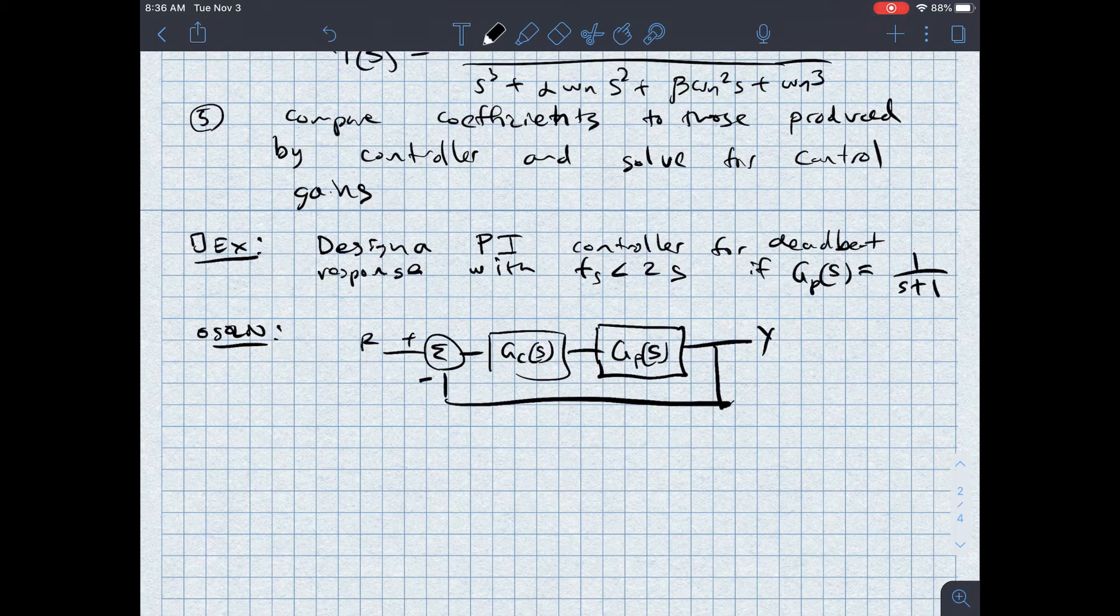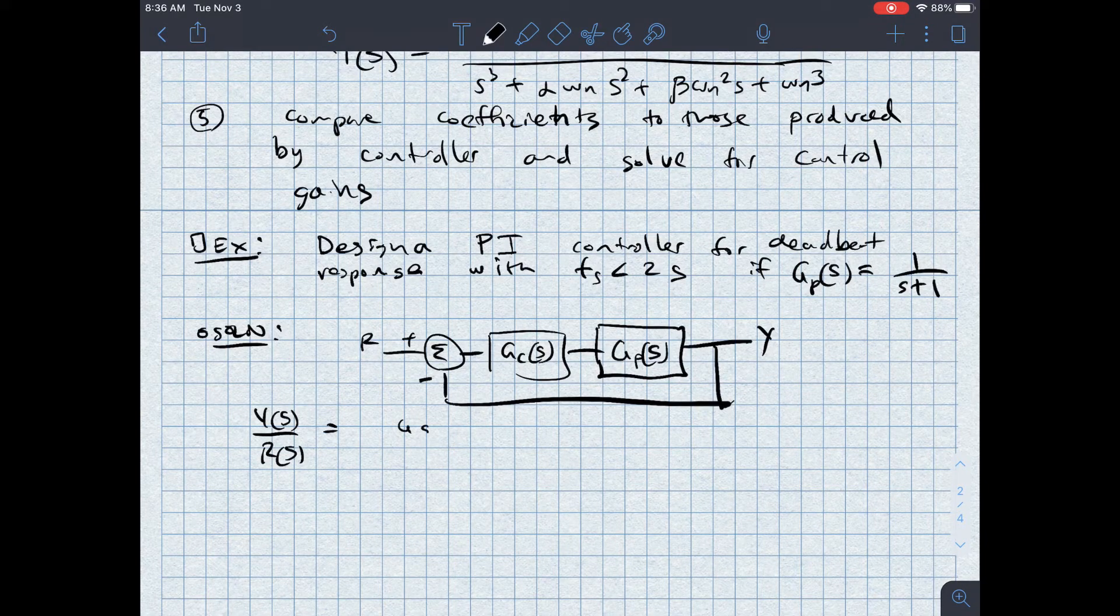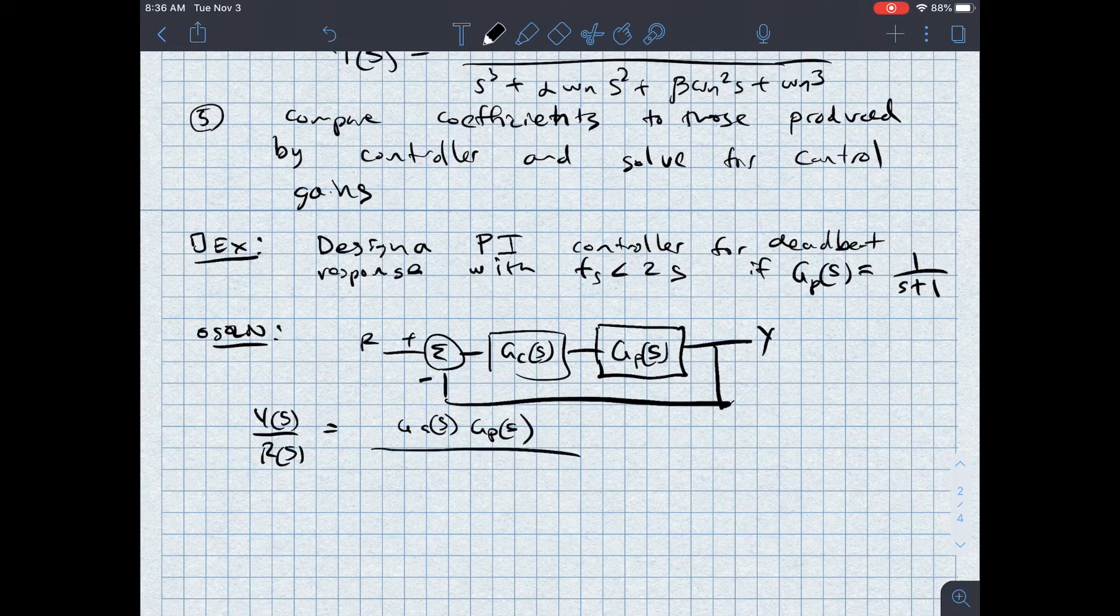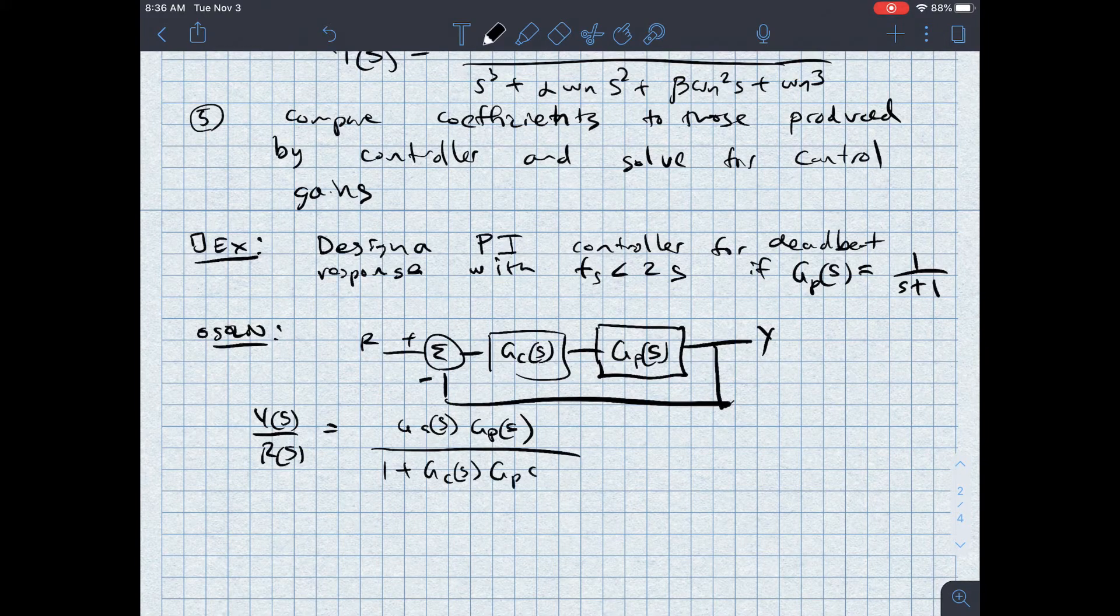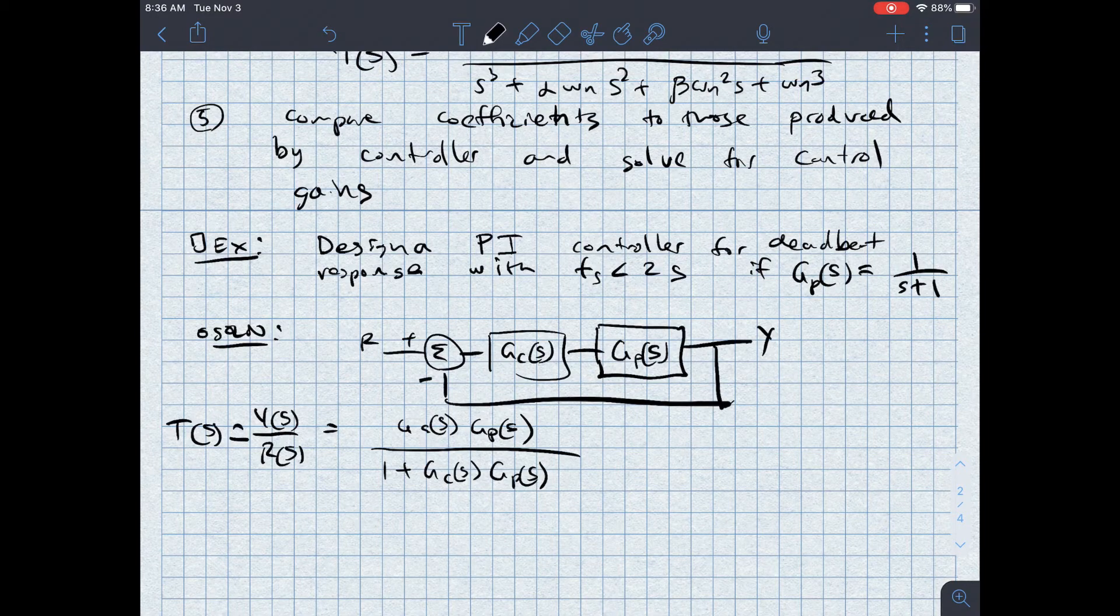And so what I know is Y of S over R of S is equal to GC of S, GP of S, over one plus GC of S, GP of S. So this is what we would call T of S in the steps above.